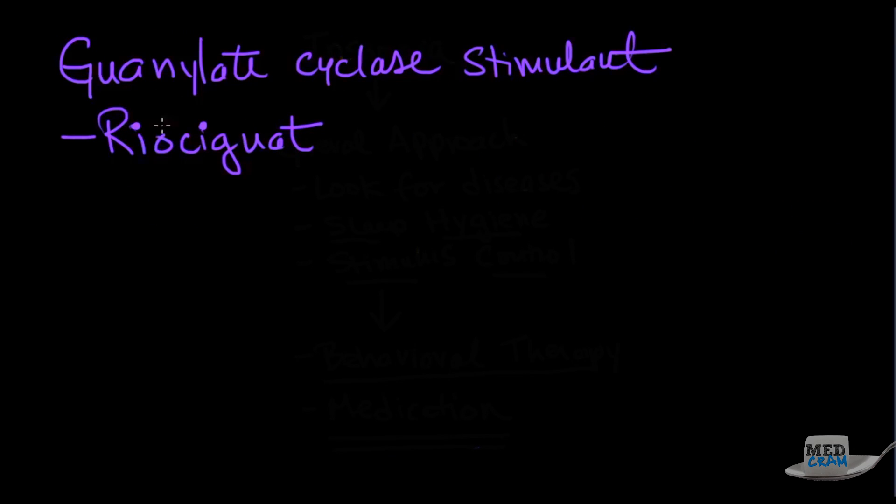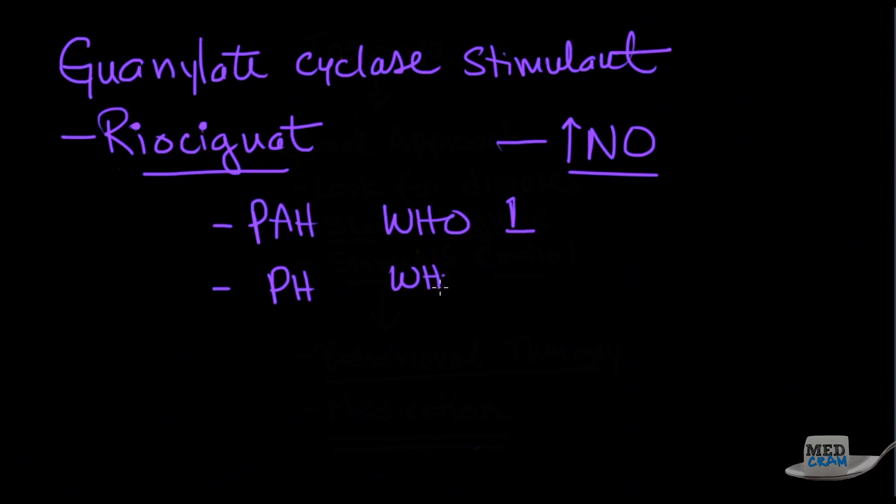The last mechanism that we're going to look at is the guanylate cyclase direct stimulants. And riociguat is one of the medications that is FDA approved, is the medication that is FDA approved to do this. And it's a direct stimulator of the nitric oxide receptor. So it increases nitric oxide just like the phosphodiesterase inhibitors do, but they do it in a different way. And they have a dual mode of action. Not only do they increase the nitric oxide receptor, they also increase the sensitivity of the sGC to endogenous nitric oxide, which is a pulmonary vasodilator. And so they also directly stimulate the receptor to mimic the action of nitric oxide. So this is a little different. And not only is it approved in PH WHO group number one, but it's also approved for WHO group number four, which remember is the chronic thromboembolic disease.